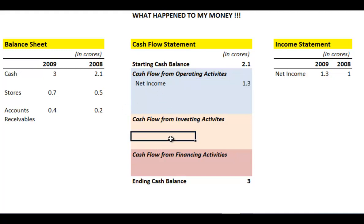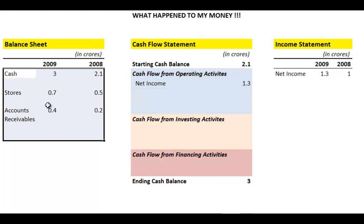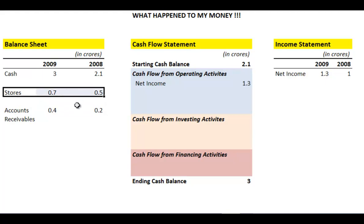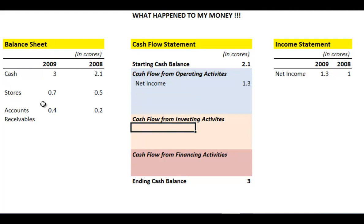Before we go to investing activities, let's double-check the balance sheet to make sure if anything has changed in the operations of the company. Cash is already accounted for. Stores — the company has invested in stores. Is this an operating activity? Well, investment in a store is for a long-term activity — for that year and probably the next 5–7 years. Investment in capital goods is generally called capital expenditure, and that is actually an investing activity because the benefits happen over a period of time.